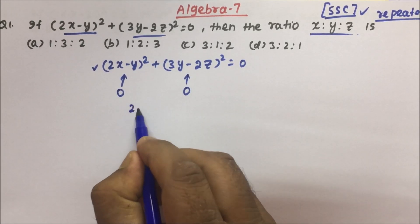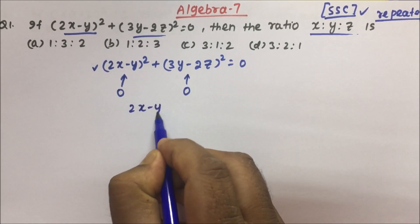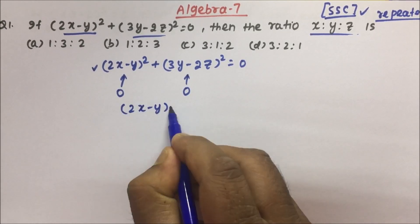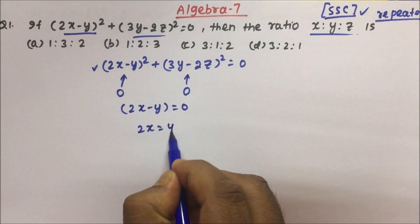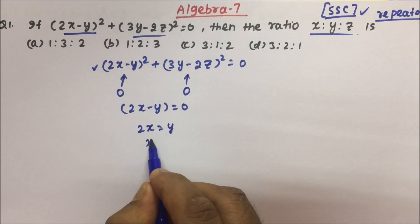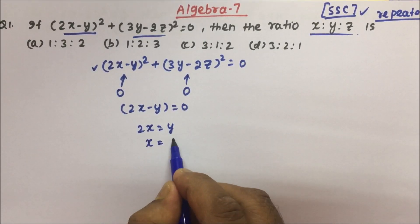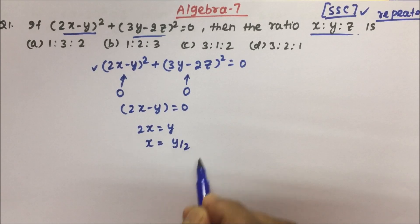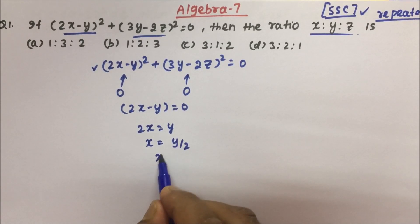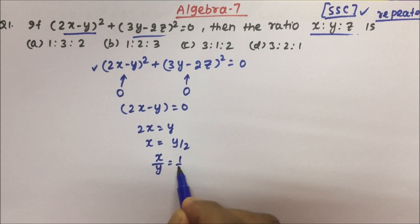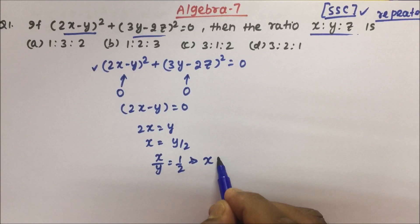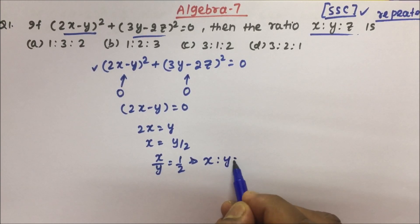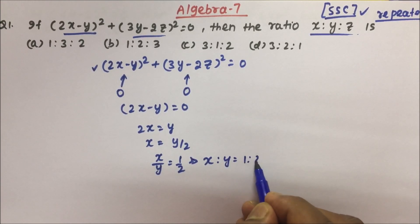If 2x − y = 0, then 2x = y, and x = y/2. So x/y = 1/2, which means x : y is nothing but 1 : 2.